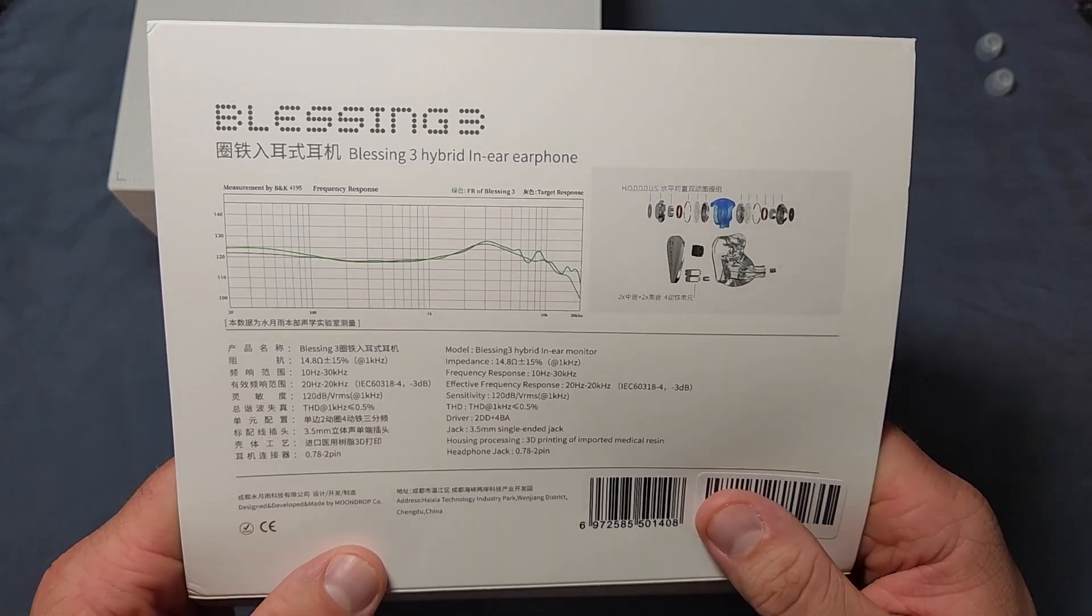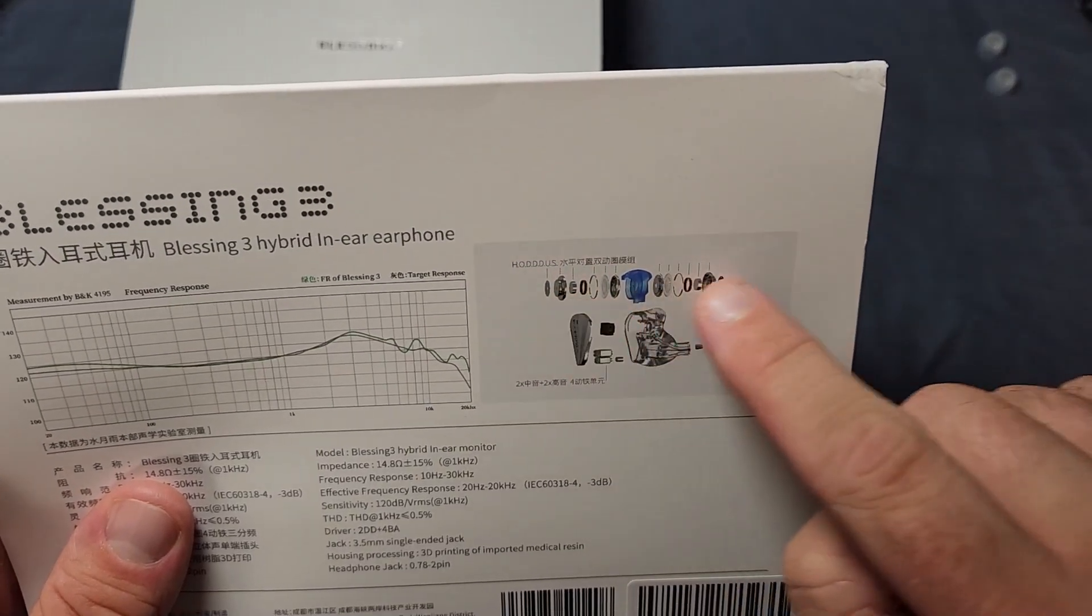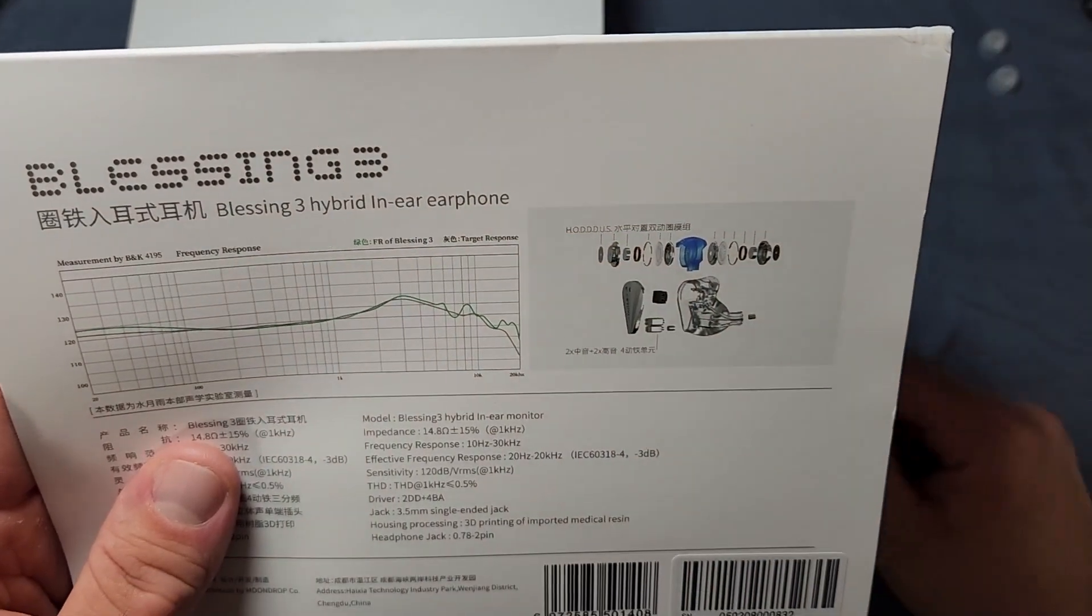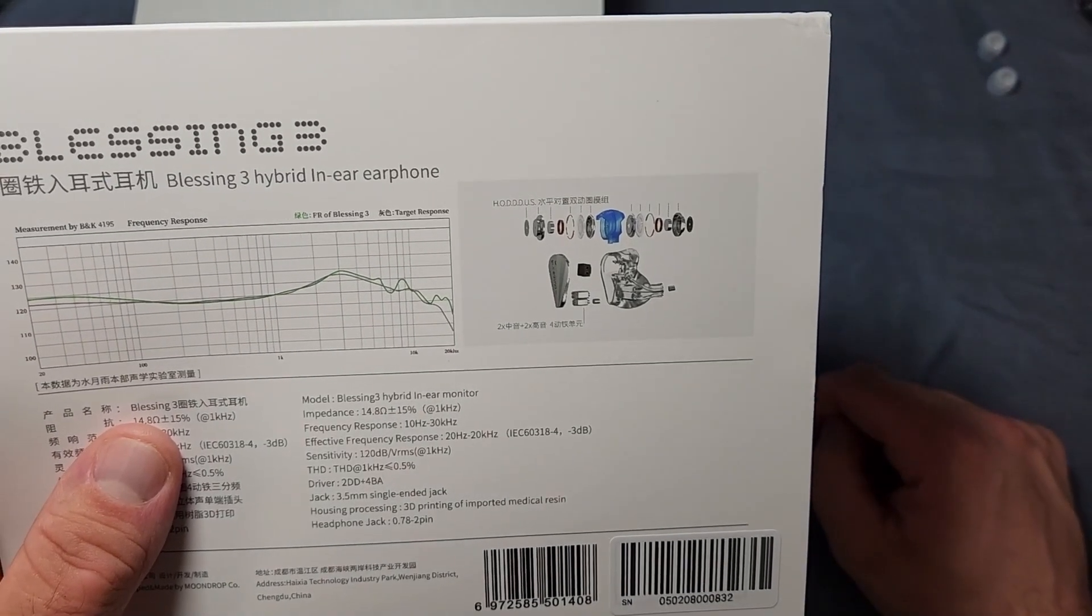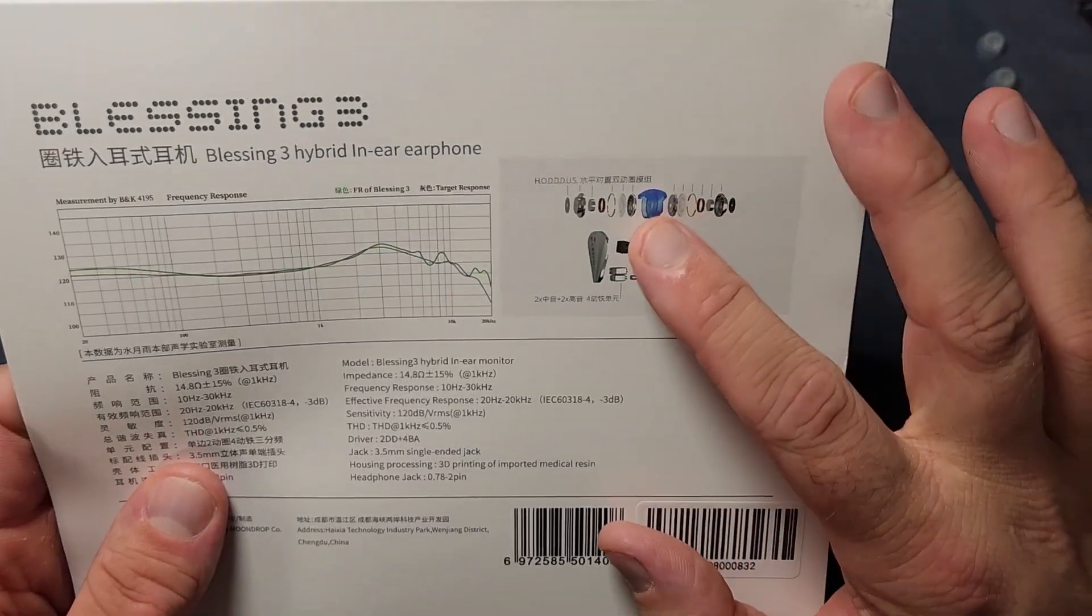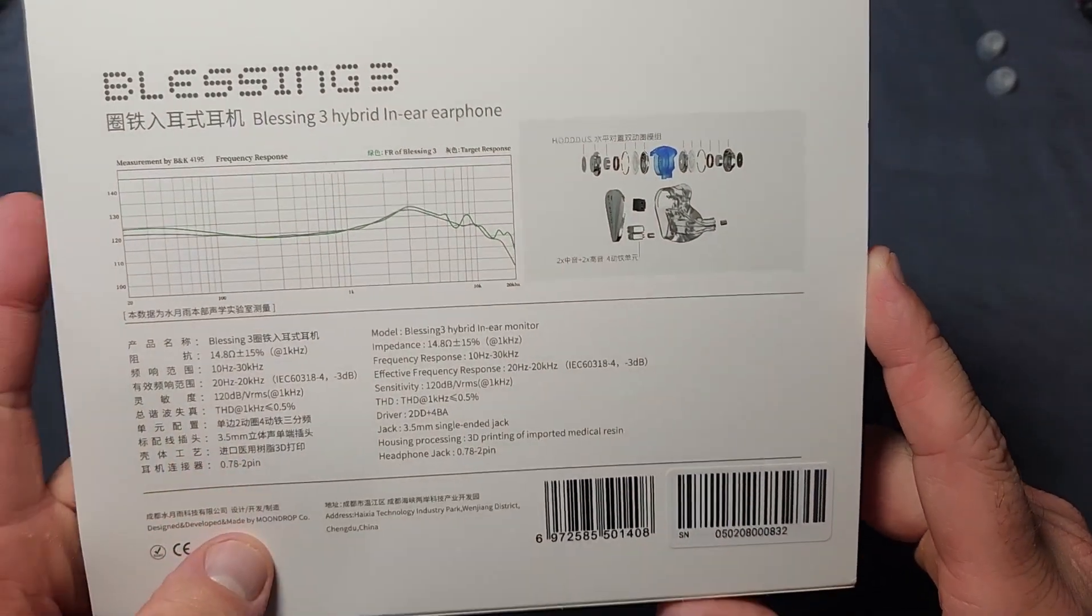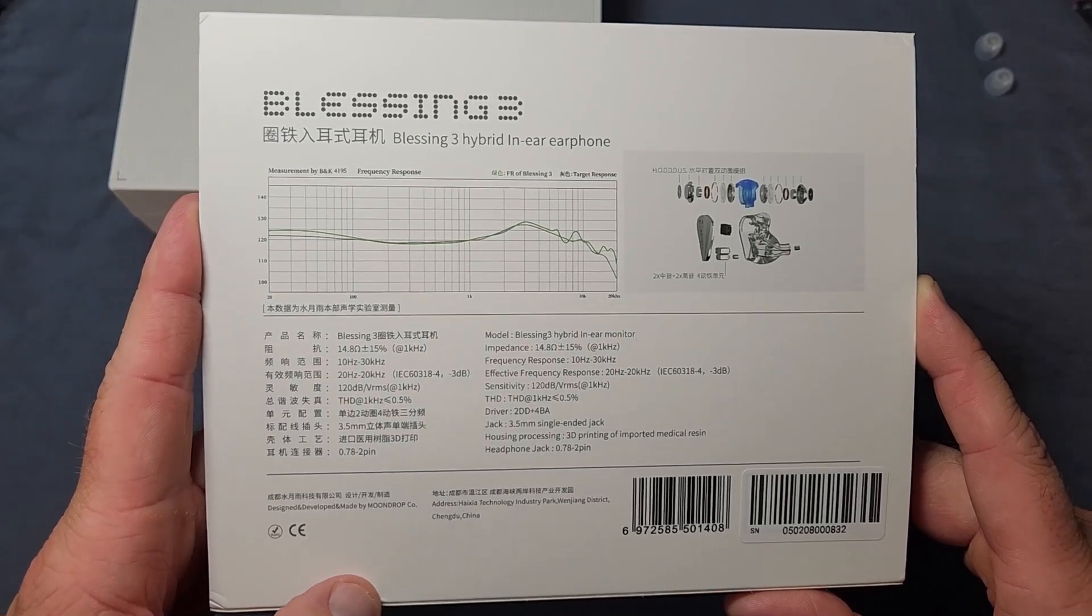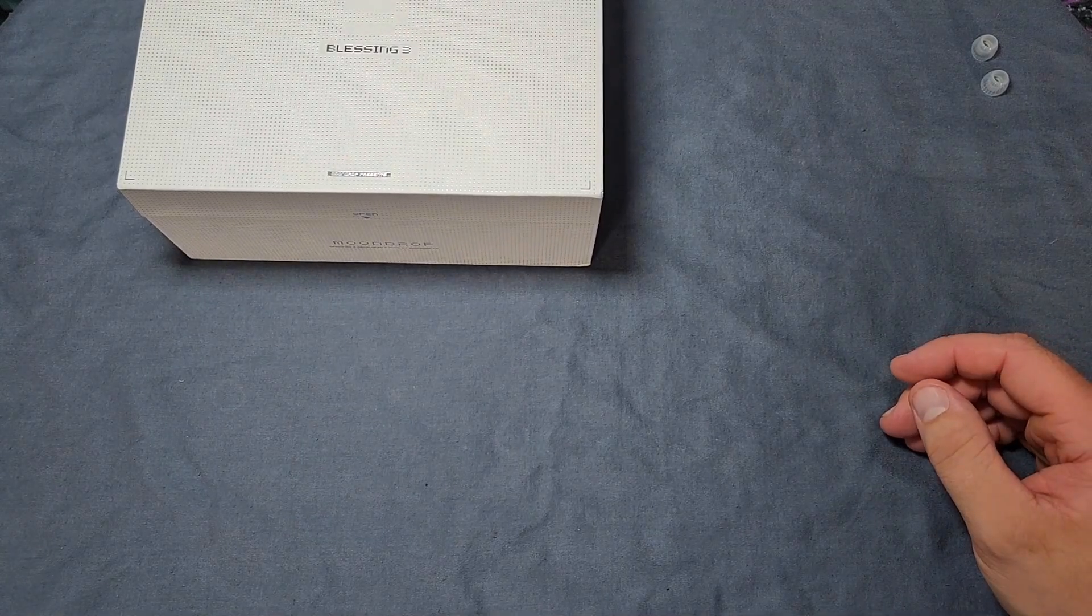The two dynamic drivers for the bass and four balanced armatures for everything else. And the two dynamic drivers are mounted together in what Moondrop calls their HODDUS bass system. I don't remember what that stands for, but that is how they do the bass in there and I will kind of show you. You can sort of see this through the IEM here in a moment. I will show you that here in a bit. So anyway, that's the back of the box and some of the important specs uses the two pin cabling system. I will show you the stock cable here in a moment.